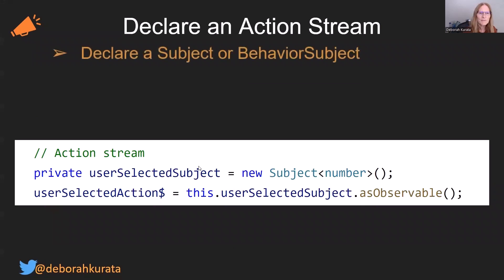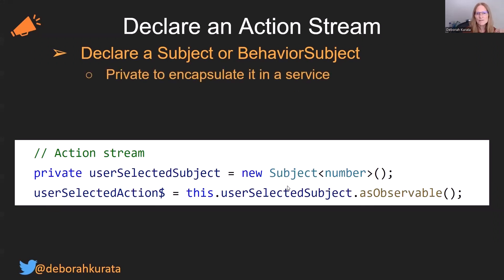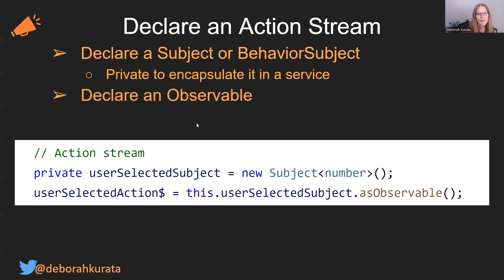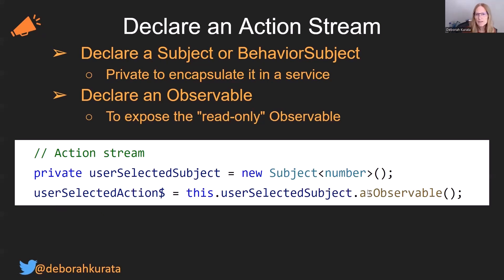How do we declare an action stream? We start by declaring a Subject or BehaviorSubject — in this example, I use a Subject. We use private to encapsulate the subject in the service, so this variable can only be accessed from within that service. Next, we declare an observable — that's our second variable — which exposes the read-only part using asObservable, so any other piece of code in our application can subscribe to or react to that and get notifications from the subject.